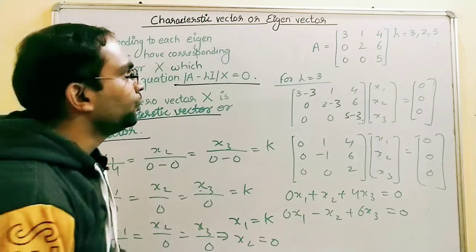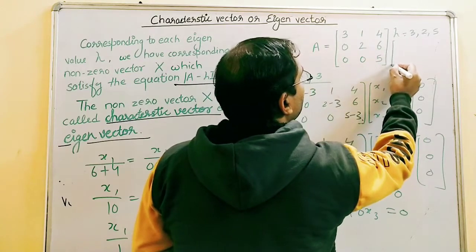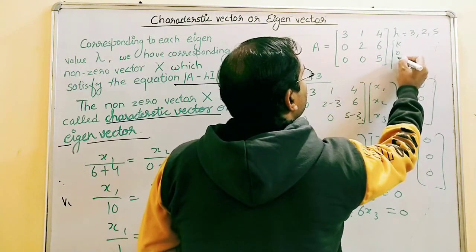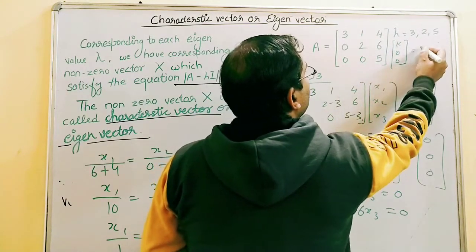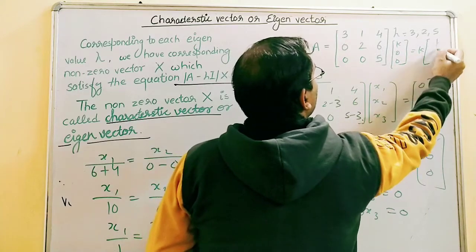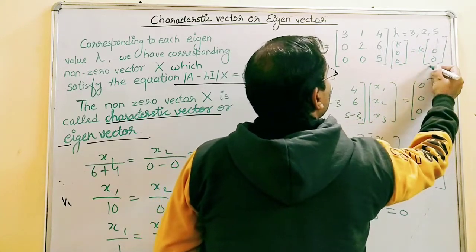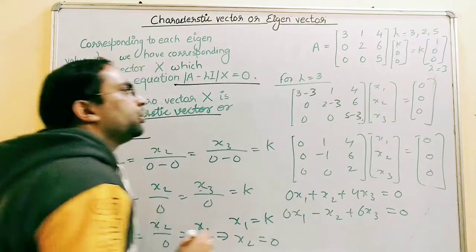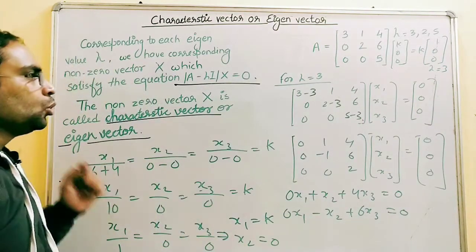We can write this in vector form. The first eigenvector for lambda equals 3 is K times [1, 0, 0], or simply [1, 0, 0].